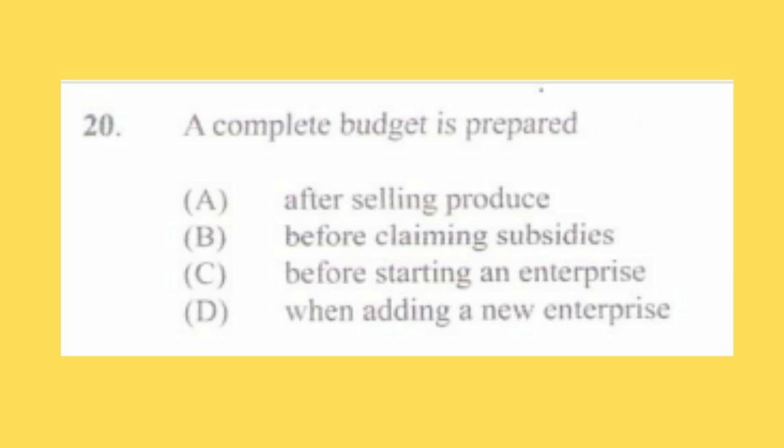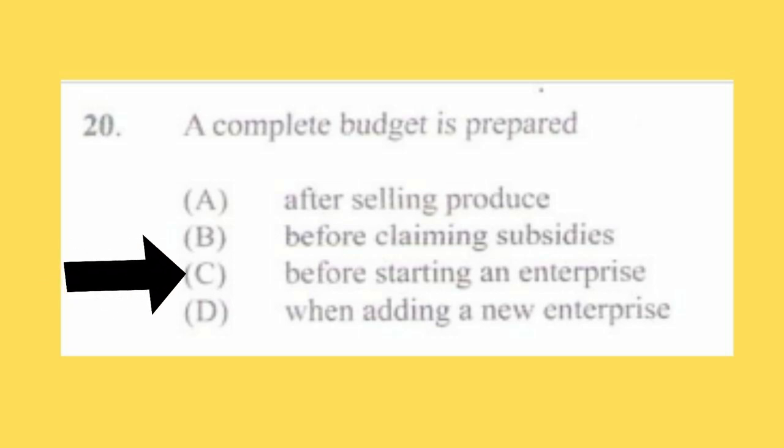Question number twenty: a complete budget is prepared a) after selling produce, b) before claiming subsidies, c) before starting an enterprise, d) when adding a new enterprise. The answer is c) before starting an enterprise. A budget is a financial plan made before the business starts — it's a plan done before you actually begin the enterprise.